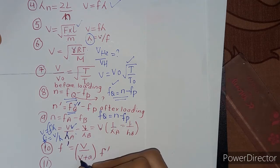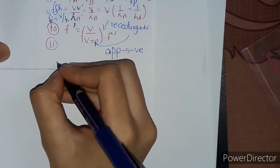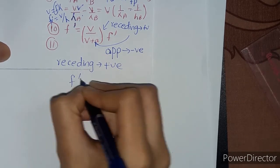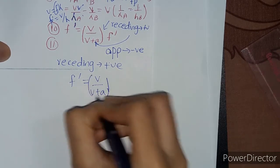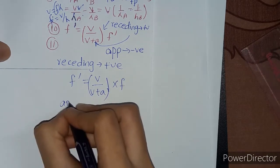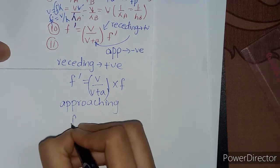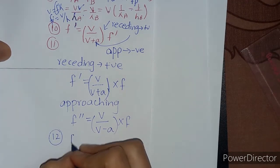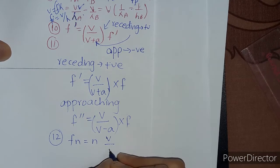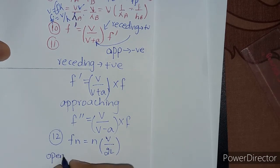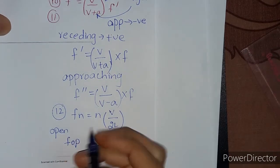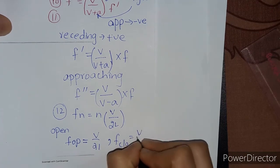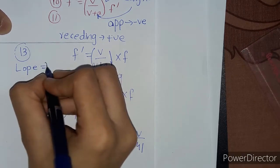In the tenth numerical we find v-dash equal to v plus v_A. For problem eleven, in the receding case we put a positive sign, giving f-dash equal to v divided by (v plus a) multiplied by f. In the approaching case, f-double-dash equals v divided by (v minus a) multiplied by f. For problem twelve, f_n equals nv divided by 2L for an open organ pipe, and v divided by 4L for a closed organ pipe.